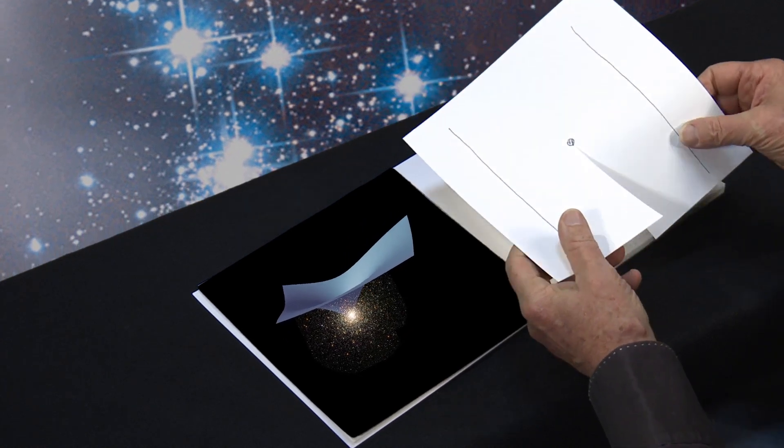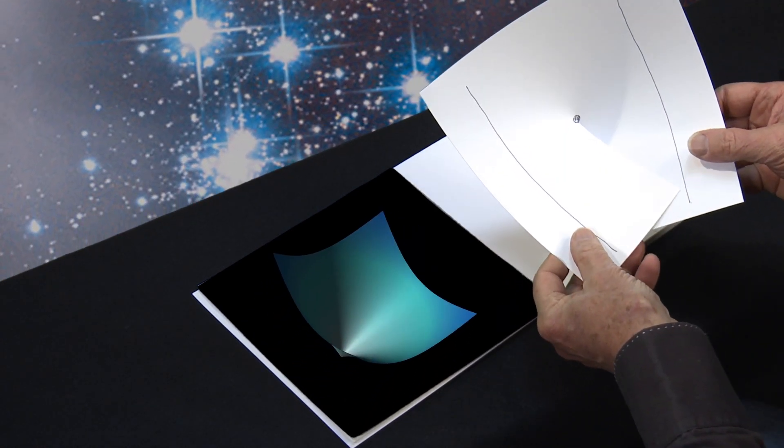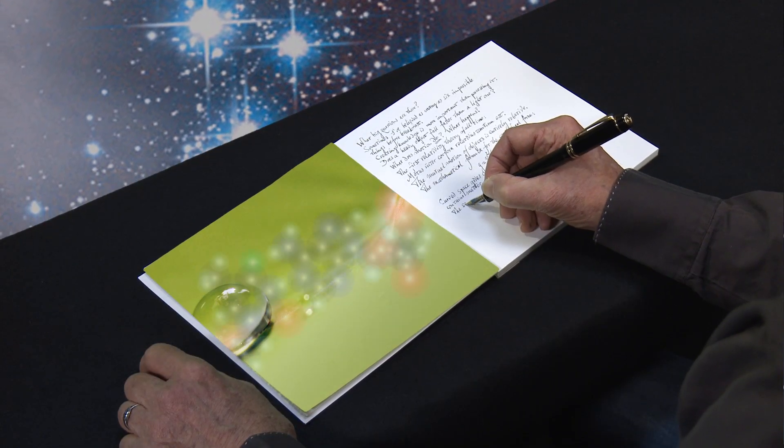Thus you see that curved space gives curved orbits. But how does matter produce this space curvature?